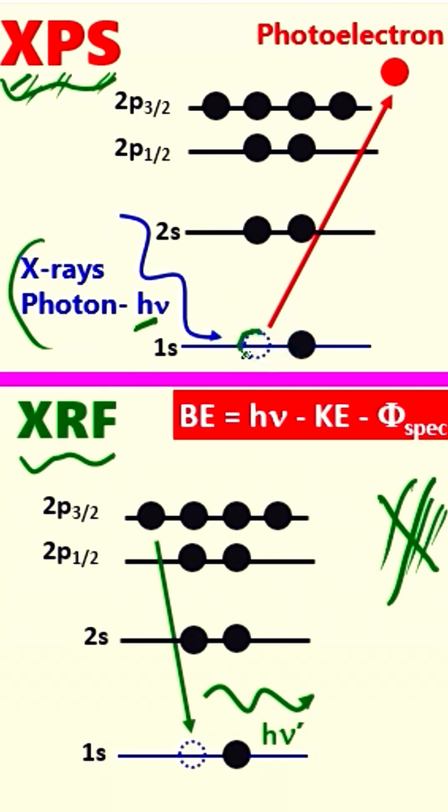These electrons we call photoelectrons, and we are only interested in finding the kinetic energy of these photoelectrons. We have this formula, and kinetic energy is the only unknown here, so once we have this we can calculate the binding energy.